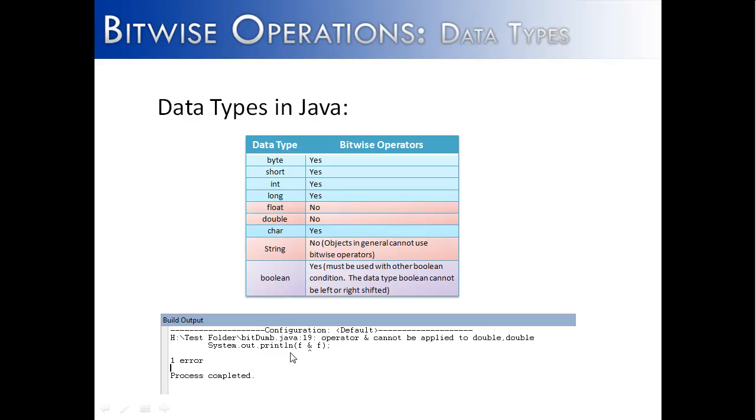And here's the kind of error that you would get. I tried to shift—I had two double values, and I tried to use the AND, and it says, cannot be applied to double, double. And you'd get these kind of errors with float, double, string, when you're trying to shift or do other kind of bitwise operations.